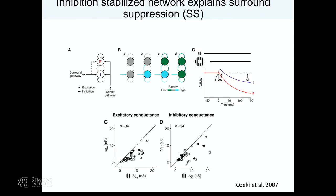I'm not going to go through all of the paper from Ozeki et al., which is David Ferster and Ken Miller's paper describing the inhibition-stabilized network. The key idea was that as you add the surround over the center, you get a transient increase in inhibitory cell activity, but that actually drives the entire network down into a suppressed state. The net effect is a withdrawal of both excitation and inhibition — less excitation, less inhibition when the stimulus is large than when it is small.